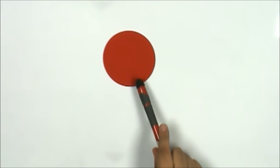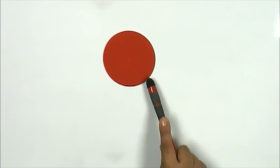This is one whole circle. Let's count the number of fractional parts that equal one whole circle.